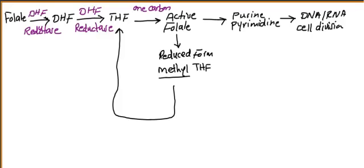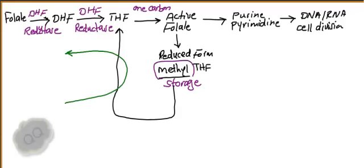Active folate is used for purine and pyrimidine synthesis, but it also needs to be converted into its reduced form, methyl-tetrahydrofolate. This is the storage form of folate inside the liver. The question is: what substance is responsible for converting the storage form back into circulation?